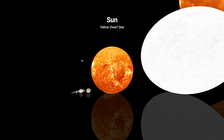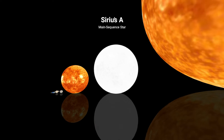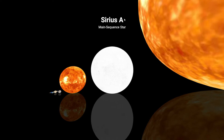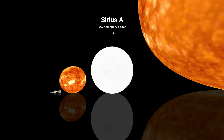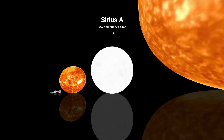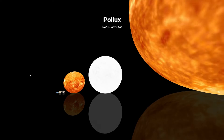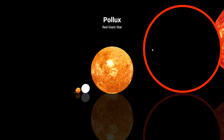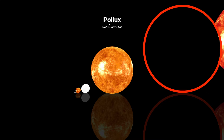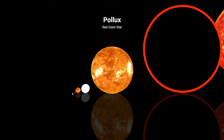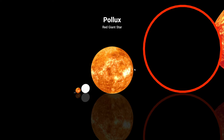Sheesh! Yellow dwarf star — that's our Sun. Then Sirius A. We had Sirius B already. It's a main sequence star. It always gets bigger. Pollux, a red giant star. I can't even see Earth anymore.